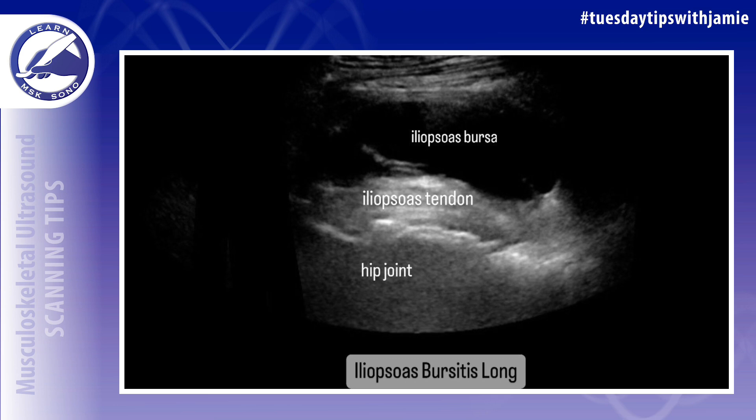The iliopsoas bursa should be evaluated for the presence of any simple or complex fluid. When fluid is present, it is important to assess the bursa for any hyperemia using power Doppler. It's also important to note whether the fluid is collapsible with transducer compression.